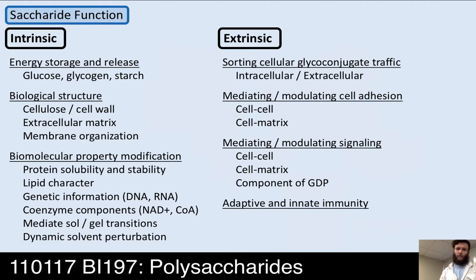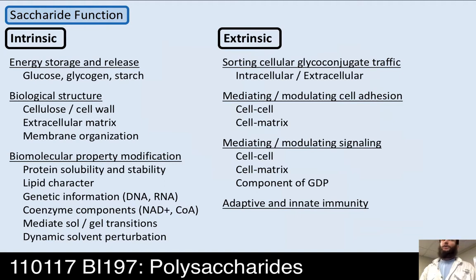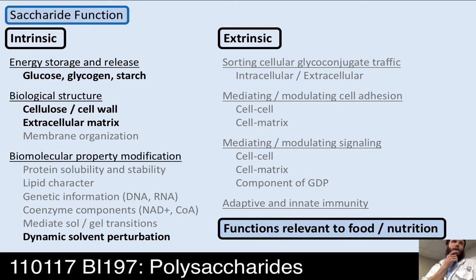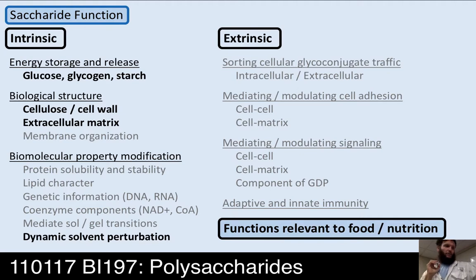There are also extrinsic functions of carbohydrates: cell sorting, cell-cell signaling, mediating cell adhesion, and aspects of the adaptive and innate immune system — all beyond the scope of this class. The functions most relevant to food science and nutrition are energy storage and release, biological structural elements, and aspects of dynamic solvent perturbation.